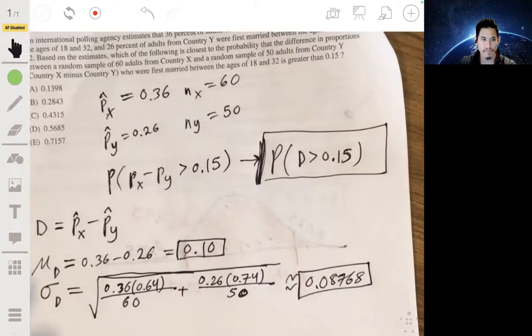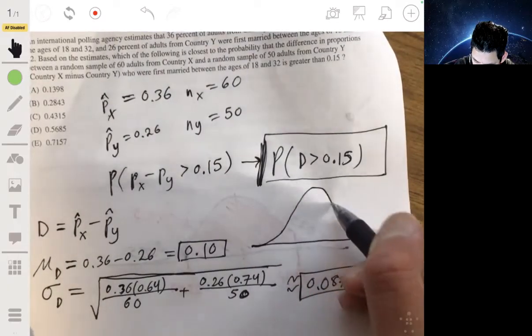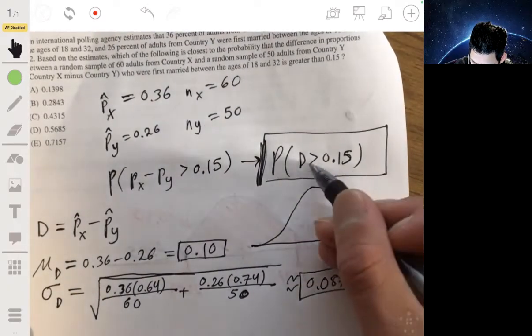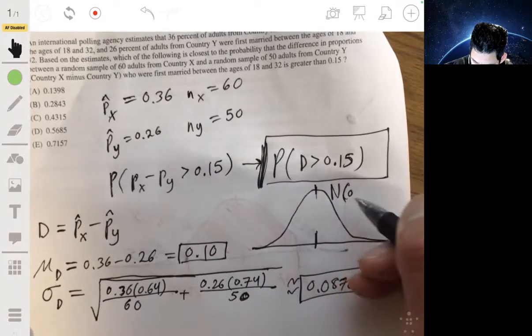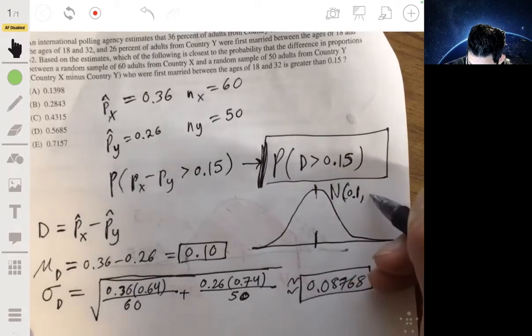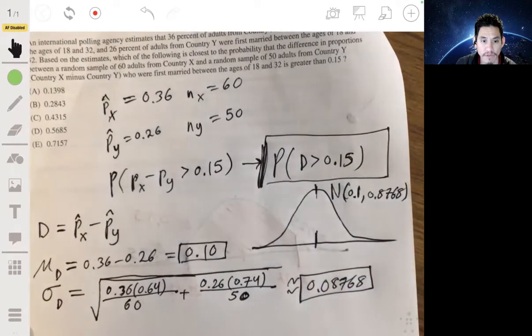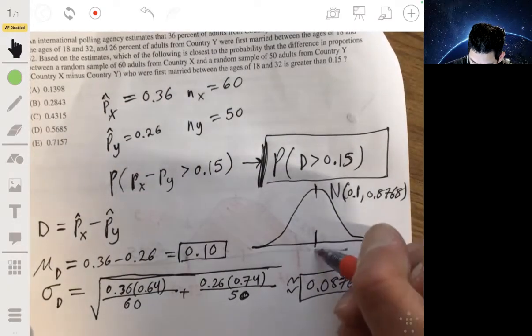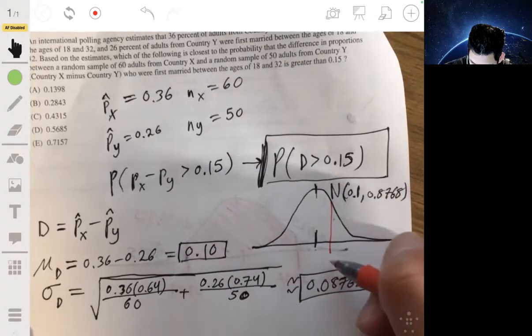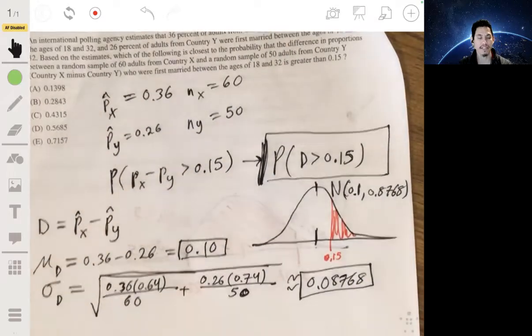Okay. So what am I looking for? Well, I'm looking at this distribution of the difference D where the mean is 0.1 and the standard deviation is 0.08768 about. I want to find the probability that D is greater than 0.15. So since this is 0.1, 0.15 will be somewhere over here probably. I want to find an area to the right. That's my goal.